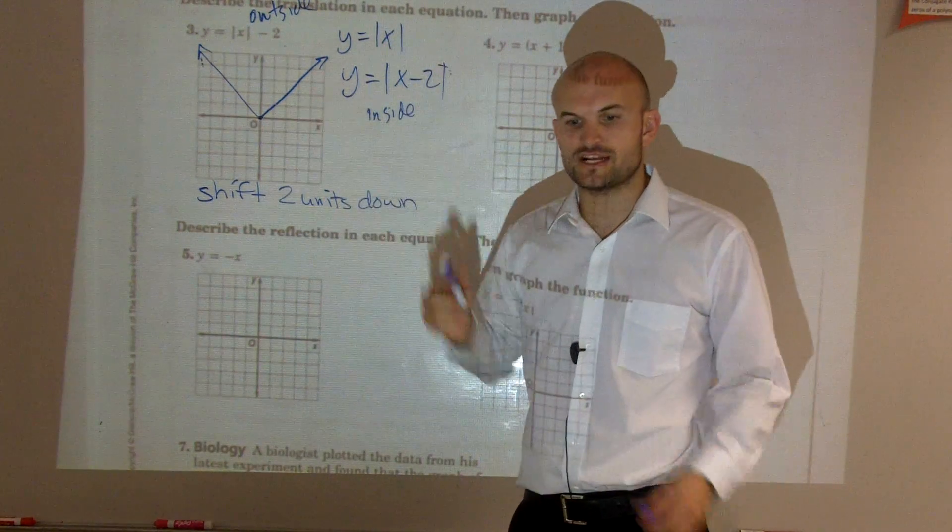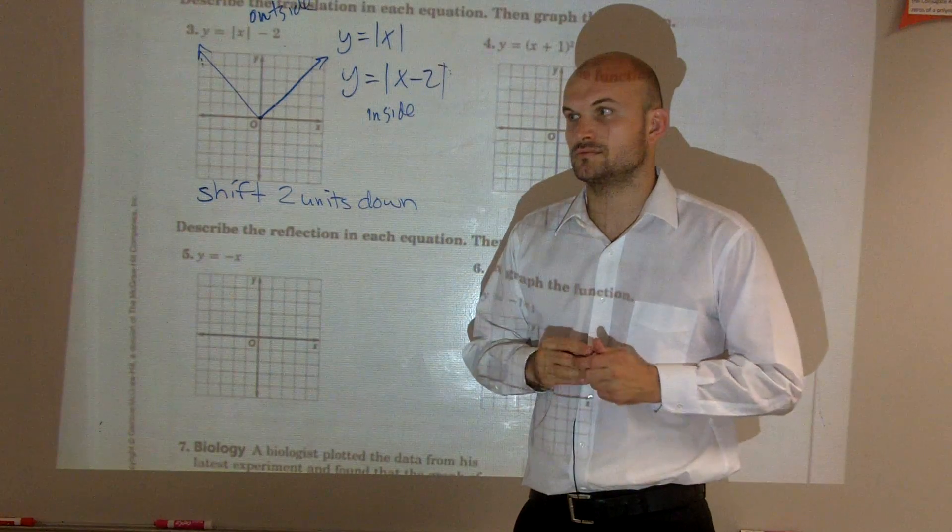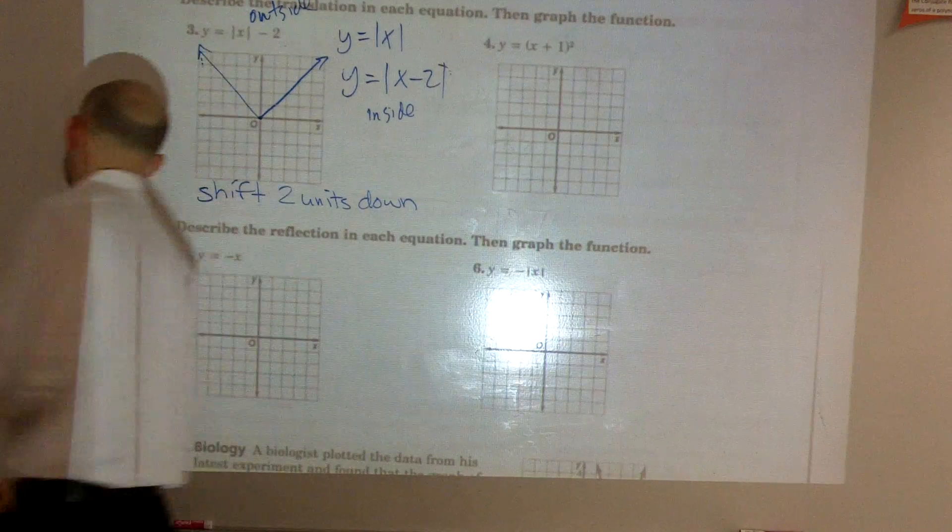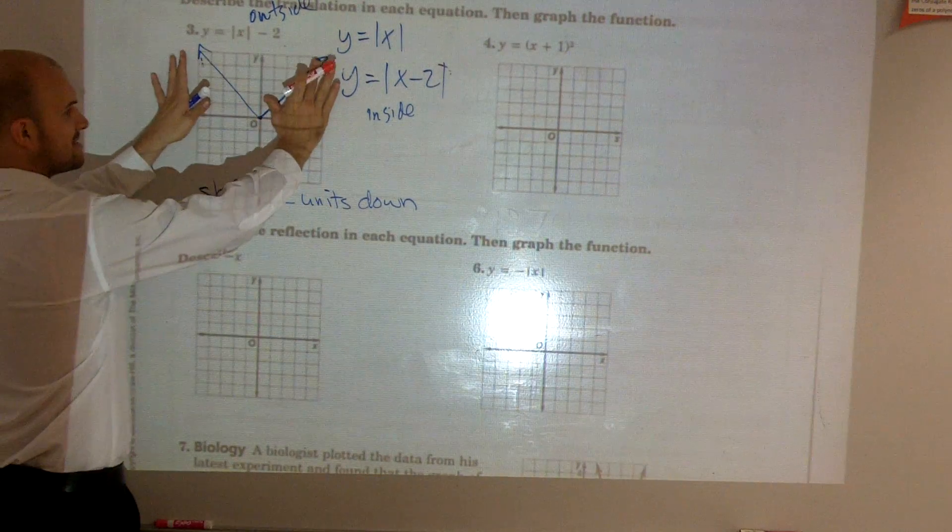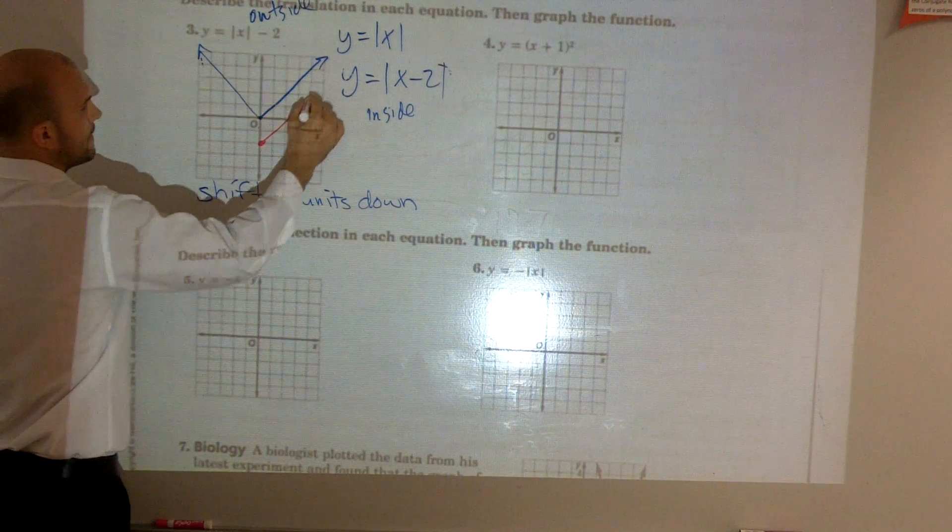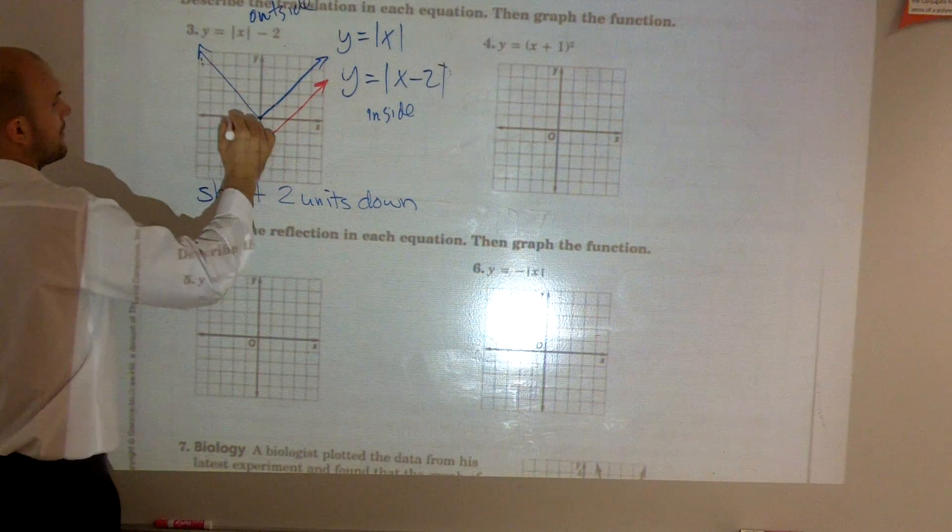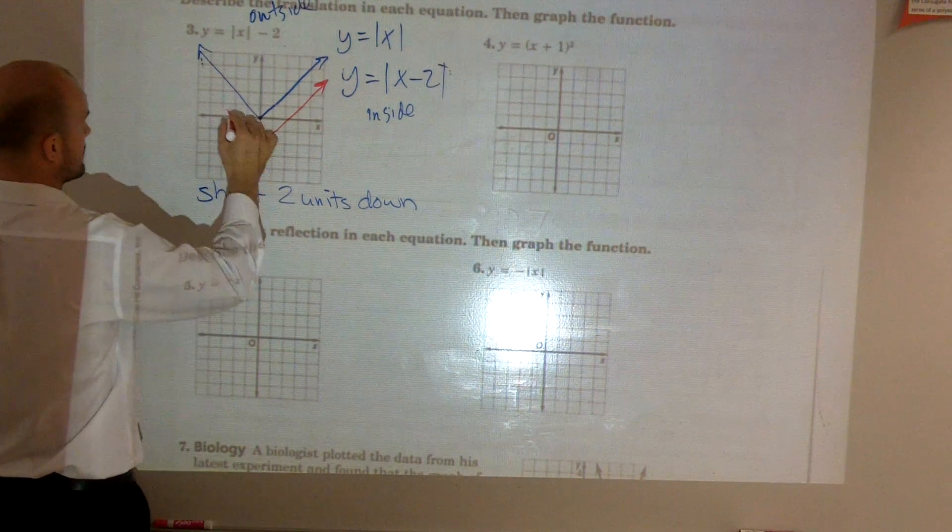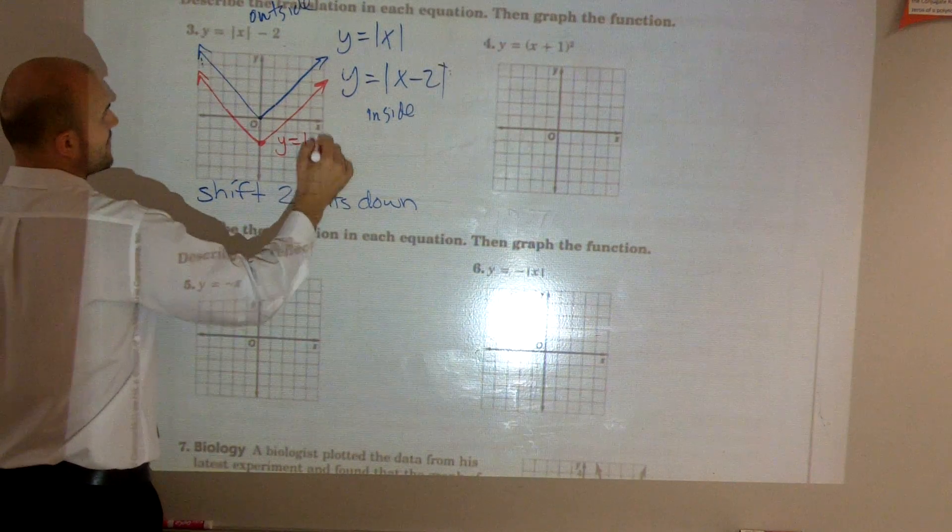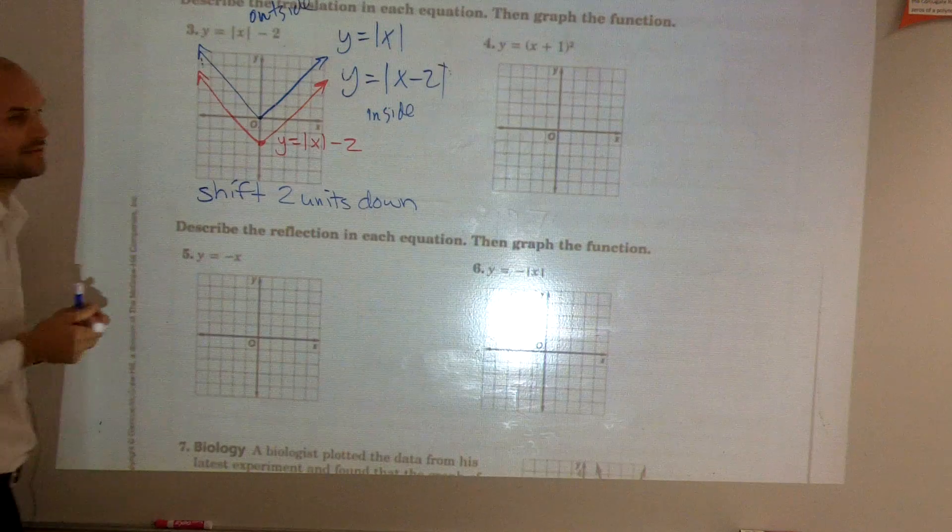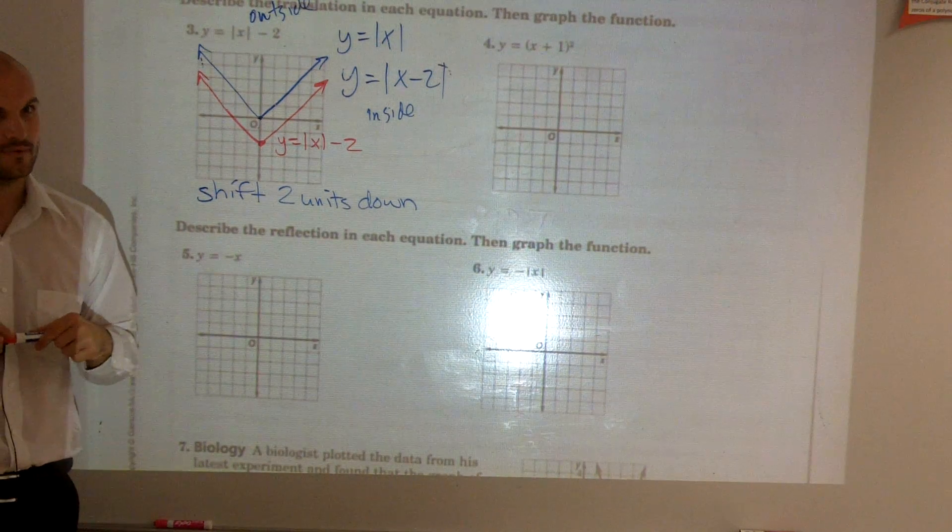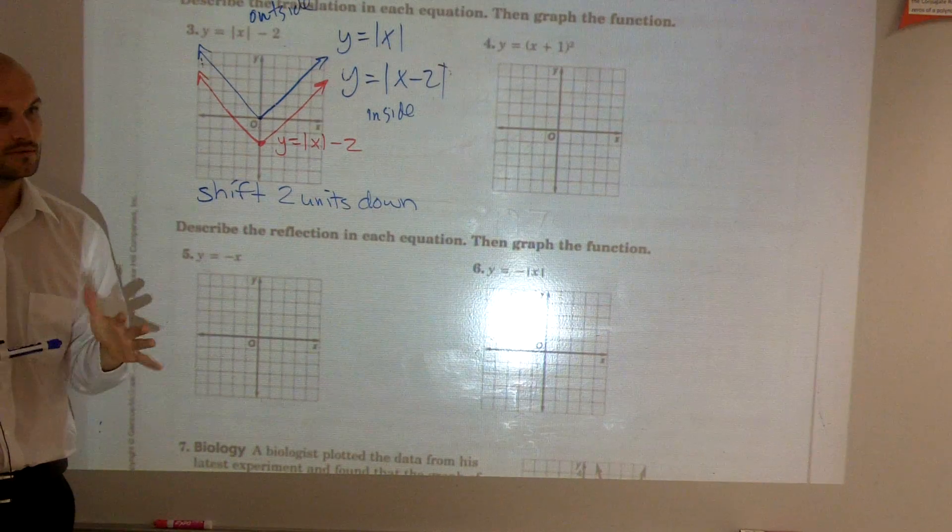Then, what did we tell the transformation told us to do? To tell us to go what? Down 2 units, right? So all I'm going to do is I'm going to take this and shift it down 2 units. So that is y equals absolute value of x minus 2. Do you guys see what that is and how to graph it? Does that make sense a little bit more? No? Questions?